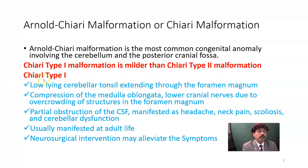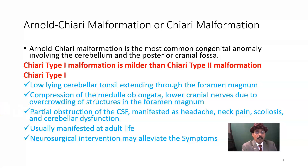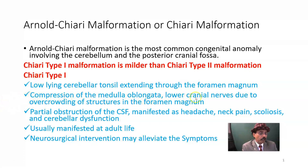What are the features of Chiari type 1 malformation? Low-lying cerebellar tonsils extending through the foramen magnum. The cerebellar tonsils are the ovoid-shaped components in the lower part of the cerebellar hemisphere — they are nervous tissue, part of the cerebellar cortex. In type 1, there is compression of the medulla oblongata and lower cranial nerves due to overcrowding of structures in the foramen magnum.